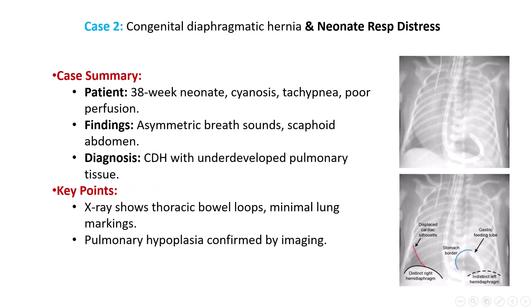In another case, a neonate delivered at 38 weeks gestation developed immediate respiratory distress post-delivery, presenting with cyanosis, tachypnea, poor perfusion, asymmetric breath sounds, and a scaphoid abdomen. The chest x-ray confirmed thoracic bowel loops with minimal lung markings and an indistinct hemidiaphragm on the affected side. This further illustrates the severe pulmonary hypoplasia associated with CDH, where underdeveloped lung tissue fails to support adequate respiration. Both cases underscore the importance of recognizing CDH early in neonates presenting with respiratory distress, asymmetric breath sounds, and characteristic imaging findings.